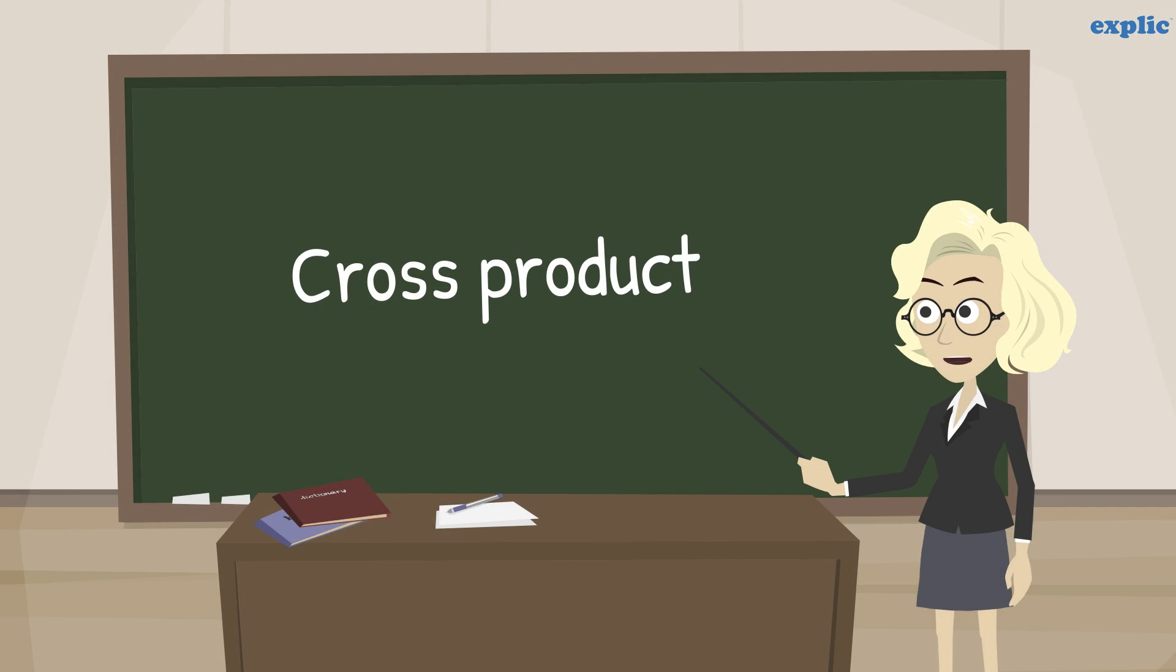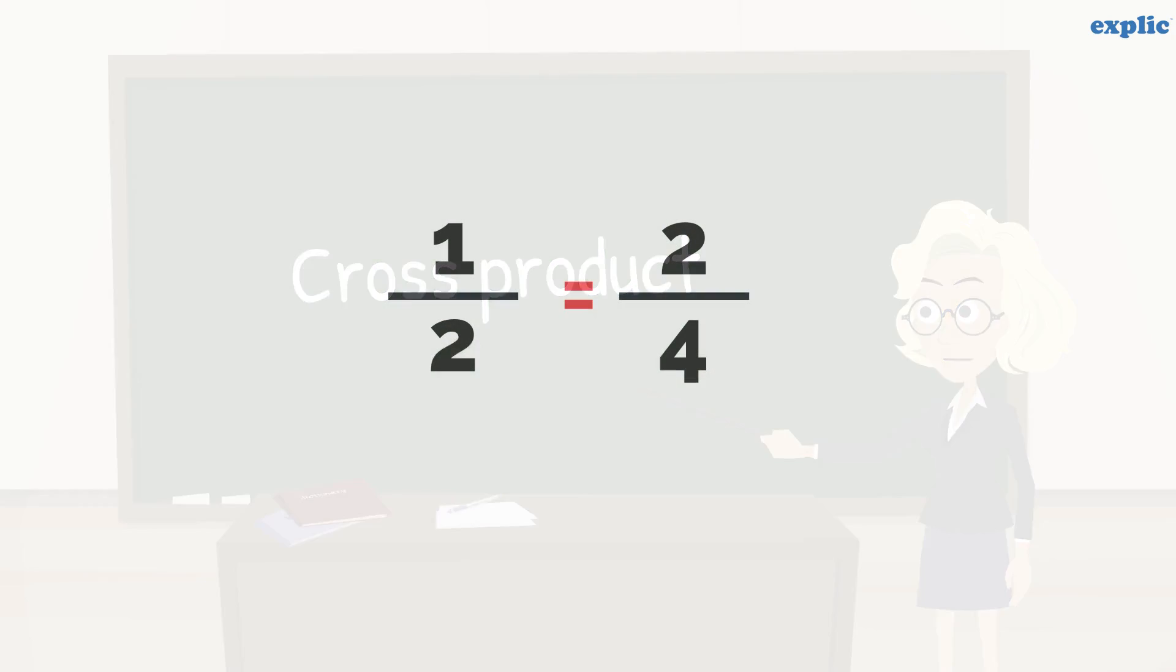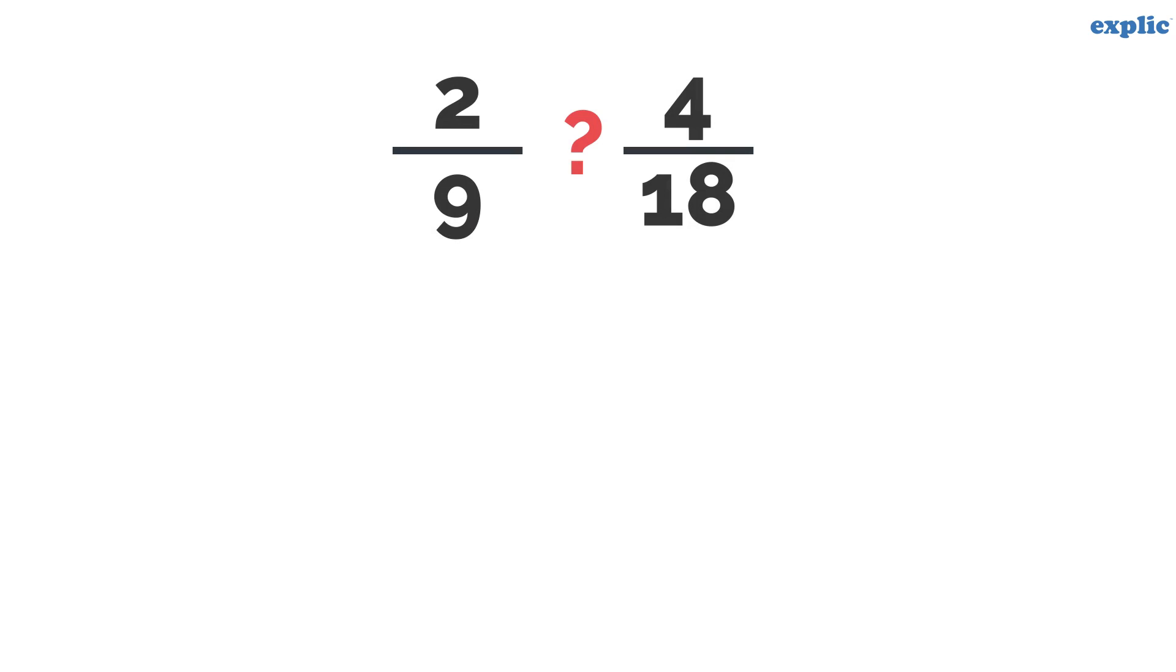To check if 2 fractions are equivalent or not, we can use the cross product. We know that 1 by 2 and 2 by 4 are the equivalent fractions. How about 2 by 9 and 4 by 18? Let's use the cross product and check.